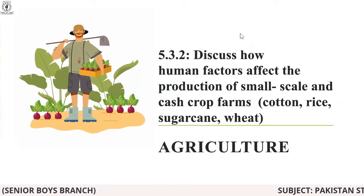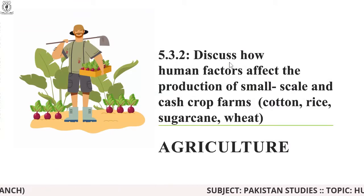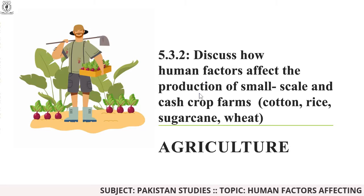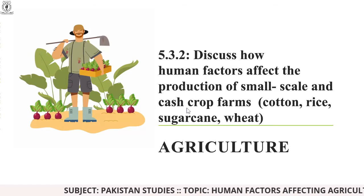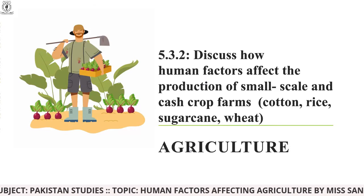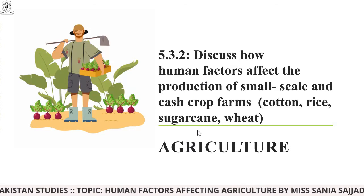SLO number 5.3.2: Discuss how human factors affect the production of small scale and cash crop farms — cotton, rice, sugarcane, and wheat.